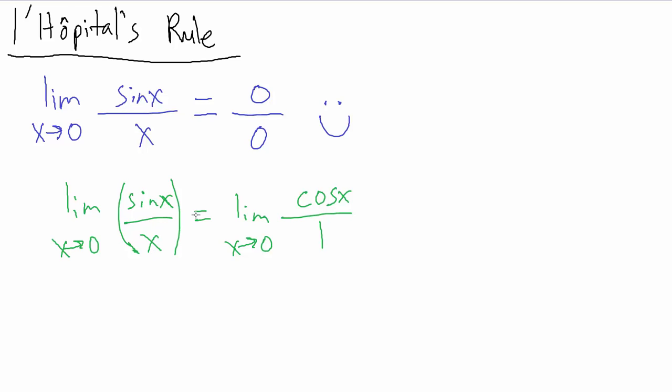limit as x goes to zero of sine of x over x. Well, if we take the derivative of the top, we get cosine of x. Derivative of the bottom, we get one.